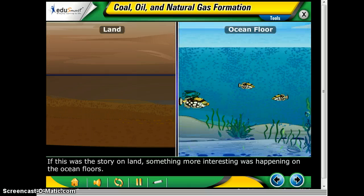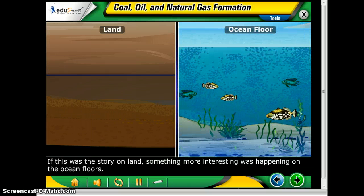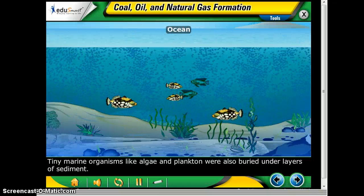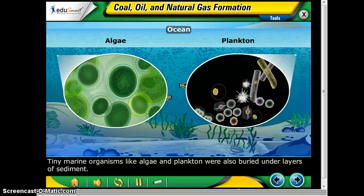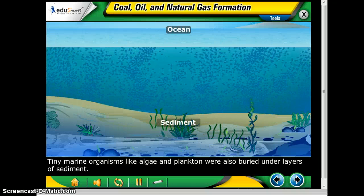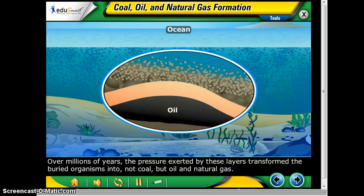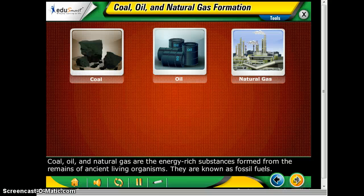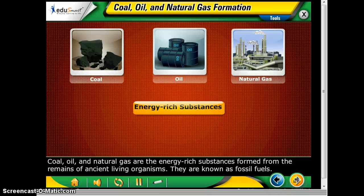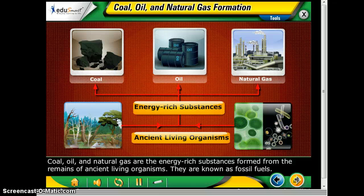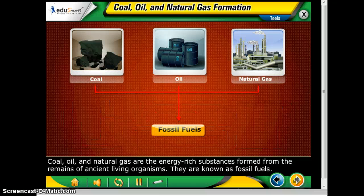If that was the story on land, something more interesting was happening on the floor of the ocean. Tiny marine organisms like algae and plankton were also buried under layers of sediment, and over millions of years the pressure exerted by these layers transformed the buried organisms into not coal, but oil and natural gas. Coal, oil, and natural gas are the energy-rich substances formed from the remains of ancient living organisms — they're known as fossil fuels.